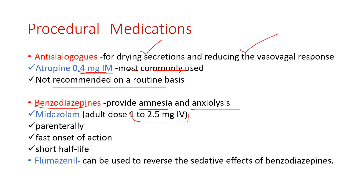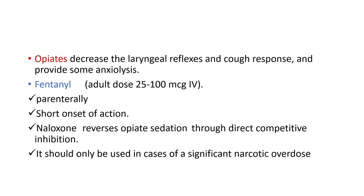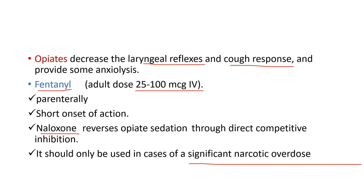Benzodiazepines are given at a dose of 1 to 2.5 mg, with a short, fast onset of action and shorter half-life. Flumazenil is used to reverse the sedative effect of benzodiazepines. Opiates decrease the laryngeal reflex and cough response; the most common agent is fentanyl 25 to 100 micrograms IV, which is short-acting parenteral. Naloxone reverses opiate sedation through direct competitive inhibition and should only be used in cases of significant narcotic overdose.